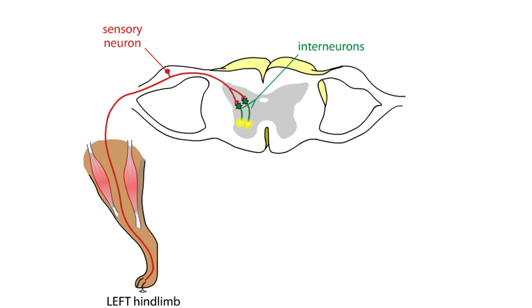The interneurons in turn project to the motor neurons. Motor neurons are located in the ventral horn of the spinal cord and send their axons out the ventral root to innervate muscles.